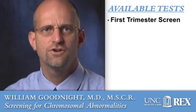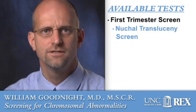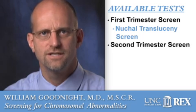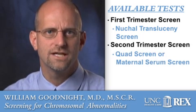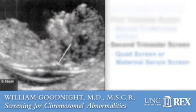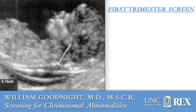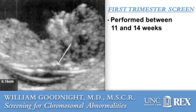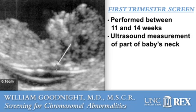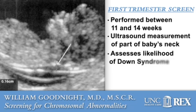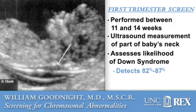The most current screening tests that are widely used include a first trimester screen, also known as a nuchal translucency screen, or a second trimester screen, also called the quad screen or the maternal serum screen. The first trimester screen is performed between 11 and 14 weeks gestational age. It involves an ultrasound measurement of part of the baby's neck. This finding, combined with the results of the mother's blood sample, assesses the likelihood of Down syndrome. It effectively detects 82 to 87% of cases.